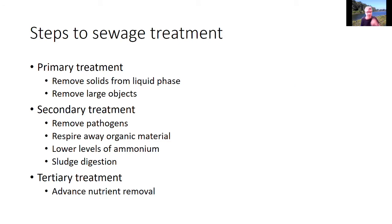There are general steps to sewage treatment — again there's a variety of ways people do this, so this is just an overview. In primary treatment, you remove solids from the liquid phase and remove large objects. In secondary treatment, you remove pathogens, respire away organic material, lower levels of ammonium because ammonium is toxic to organisms in streams and rivers, and digest the sludge. In tertiary treatment, some systems have advanced nutrient removal to stop eutrophication downstream.